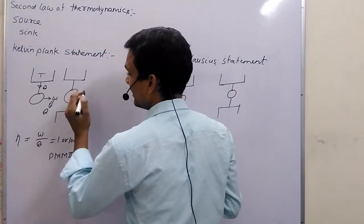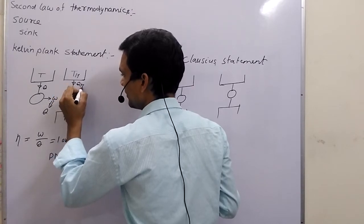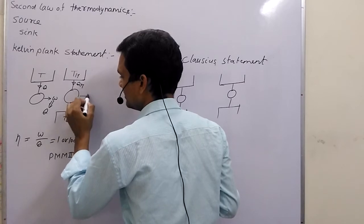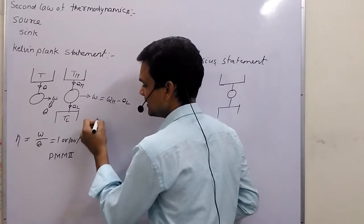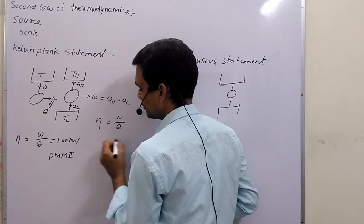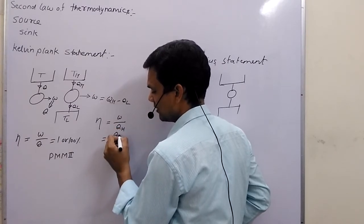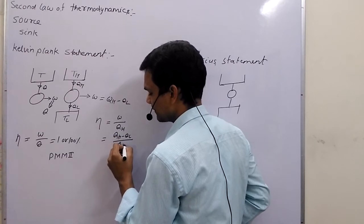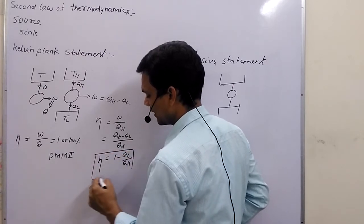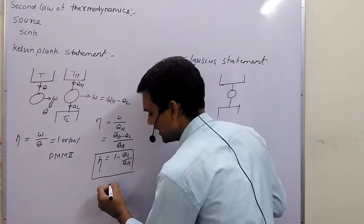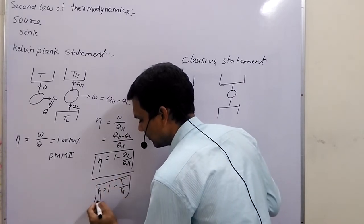According to the Kelvin-Planck statement, a device must exchange heat with two thermal energy reservoirs. Suppose TH is the higher temperature reservoir and TL is the lower temperature reservoir. The device receives QH amount of energy from the high-temperature reservoir, rejects QL amount of energy to the low-temperature reservoir, and produces W amount of work equal to QH minus QL. The efficiency formula is W upon QH, which equals QH minus QL upon QH, or 1 minus QL upon QH. We can also write this in terms of temperature as 1 minus TL upon TH. This is the Carnot efficiency formula.